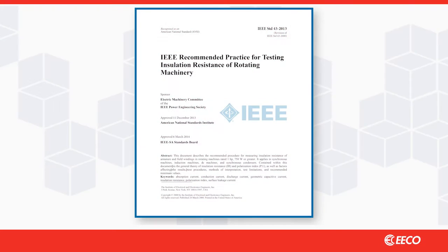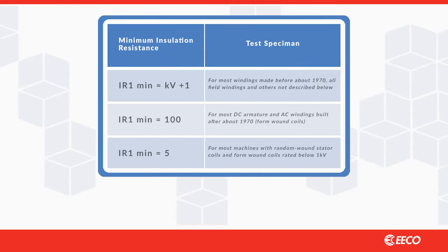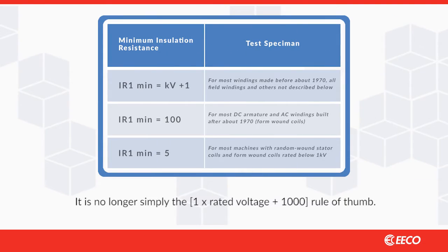IEEE 43 provides the guidelines for the test, which underwent considerable change in 2000 and was further revised in 2013. For example, most form coil windings manufactured after 1970 should have a minimum of 100 megaohms for operation. Again, that is the minimum.